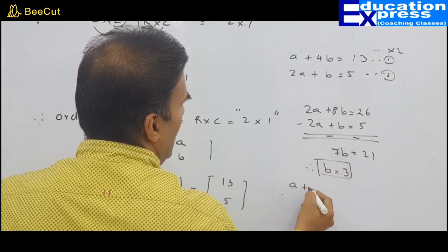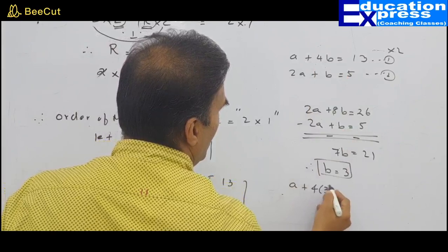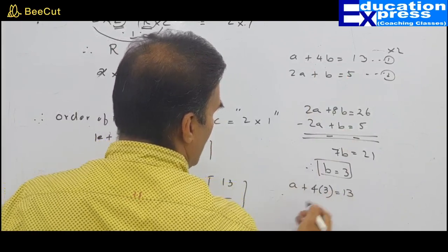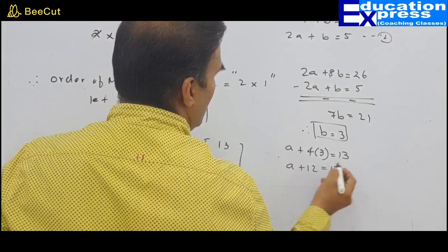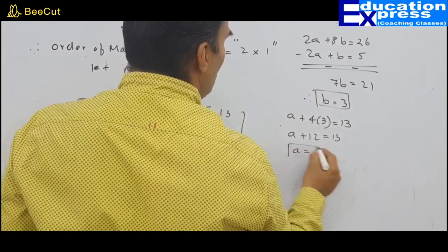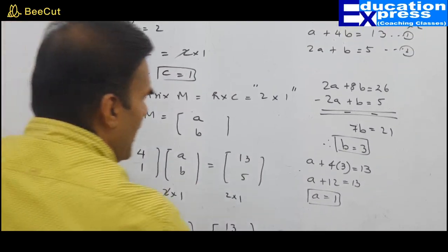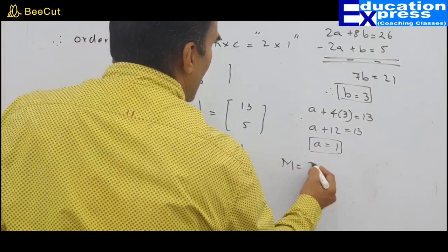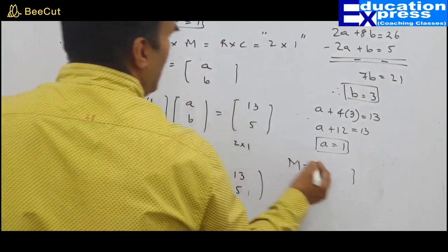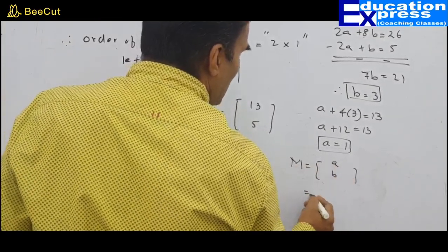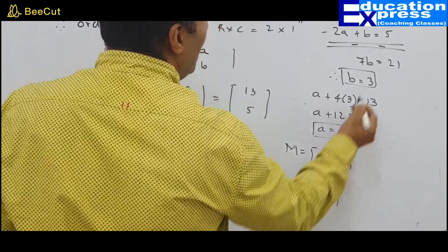Once we know B equals 3, we can substitute: A plus 4 into 3 equals 13, so A plus 12 equals 13, therefore A equals 1. We are interested in finding matrix M. Matrix M was [A, B] — substituting, A is 1 and B is 3.